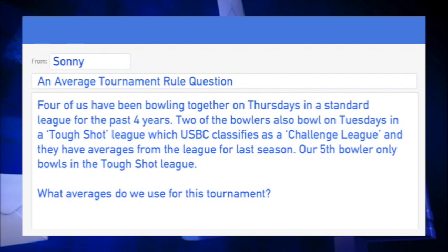Four of us have been bowling together on Thursdays in a standard league for the past four years. Two of the bowlers also bowl on Tuesdays in a tough shot league, which USBC classifies as a challenge league, and they have averages from that league for last season. Our fifth bowler only bowls in the tough shot league. What averages do we use for this tournament?